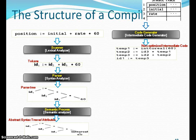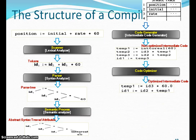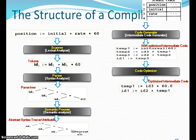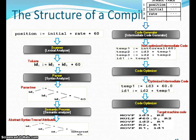After that, the intermediate code generator generates the intermediate code. Among the different techniques available, three-address code is one of the most popular techniques to generate intermediate code. Then the code optimizer: once the intermediate code is generated, the code optimizer tries to reduce the number of instructions and generate optimum code.